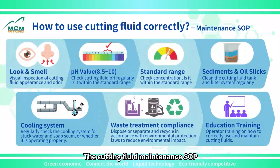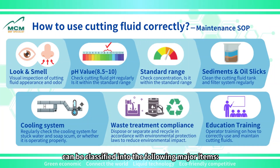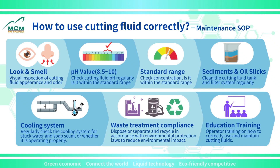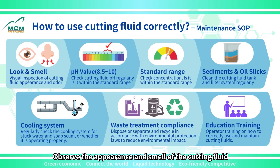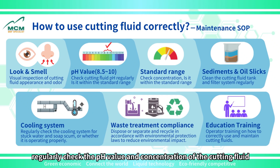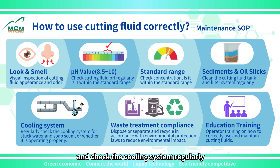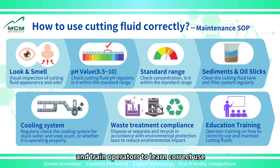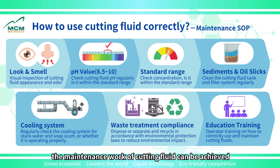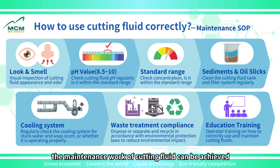The cutting fluid maintenance SOP can be classified into the following major items: observe the appearance and smell of the cutting fluid; regularly check the pH value and concentration of the cutting fluid; clean the sediment in the tank and the floating oil in the filter system; and check the cooling system regularly. Finally, properly handle the cutting fluid waste and train operators to learn correct use. If the above items are done well, the maintenance work of cutting fluid can be achieved.